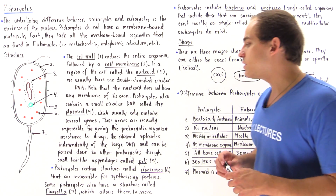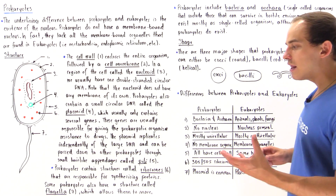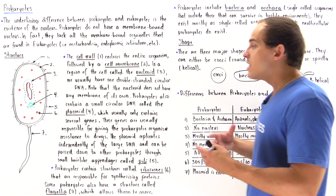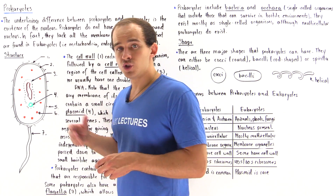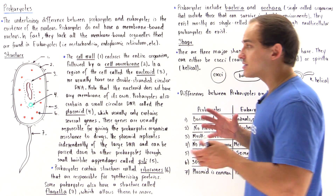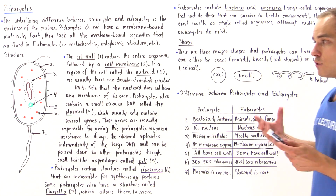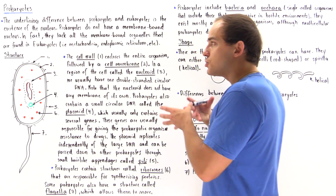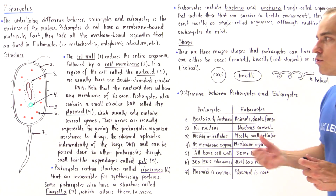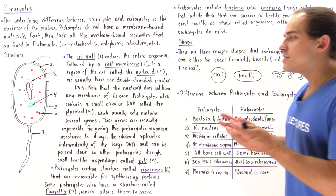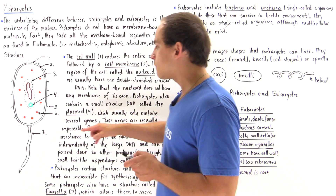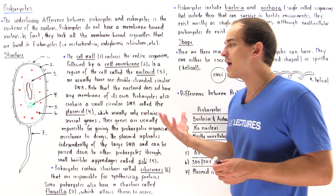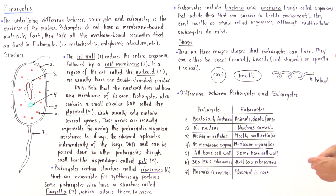We also have a structure known as the flagella or flagellum. The flagella is basically the structure that allows our organism to move. The flagella found in prokaryotes is different from the flagella found in eukaryotes — the type of protein that the flagella is composed of inside prokaryotes is different than in eukaryotes.